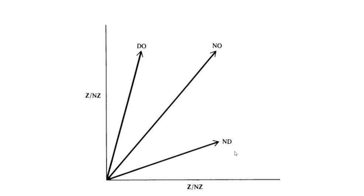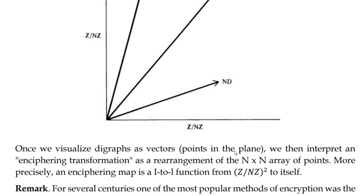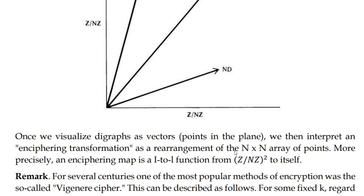Similarly, the diagram will have x and y, and y will be 3. Now, we are going to make the diagram vectors and points, and then make the transformation of the n-ciphers — an n by n array of points. We are going to make the n-ciphers map, which is a 1-1 function from Z over nZ squared to itself.